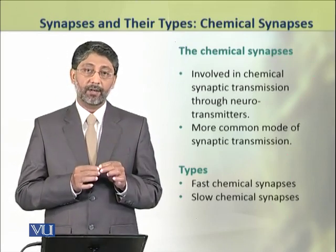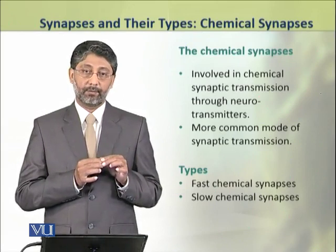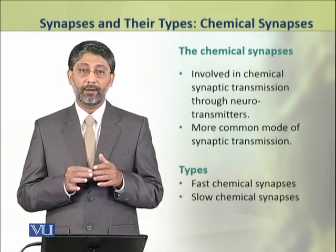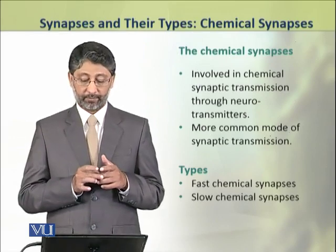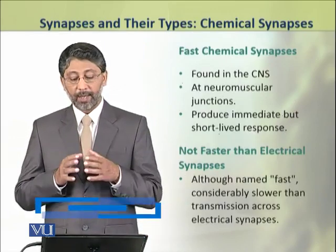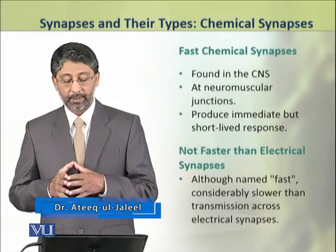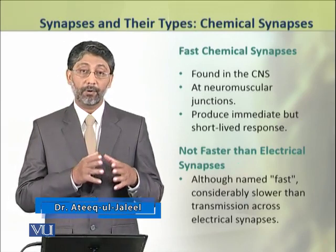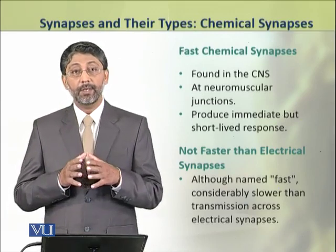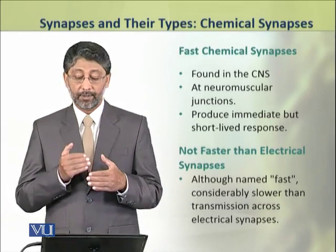There are two types of chemical synapses: fast chemical synapses and slow chemical synapses. The fast chemical synapses are present in the central nervous system and at neuromuscular junctions. They produce immediate but short-lived responses.